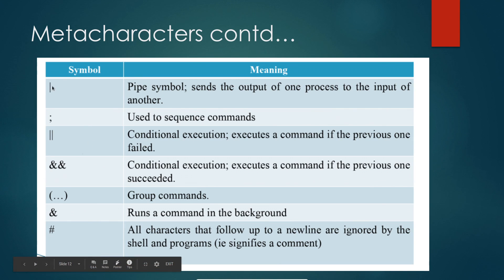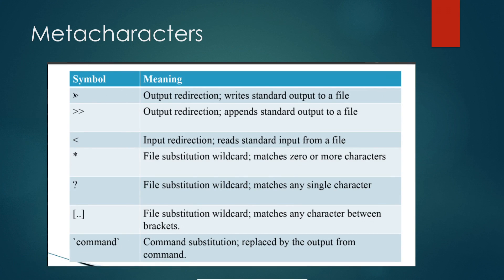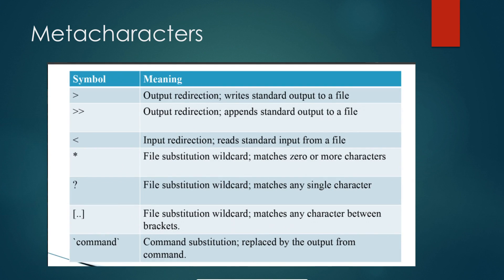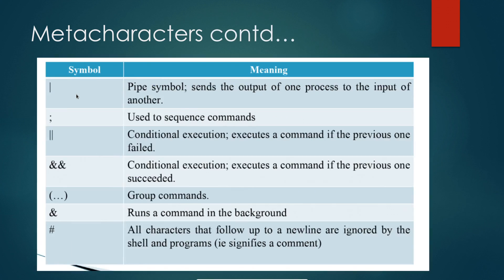The pipe symbol '|' sends the output of one process as input to another process. This is different from the greater-than symbol, which sends output to a file to be stored. With pipe, the output of one process goes directly as input to the next process.